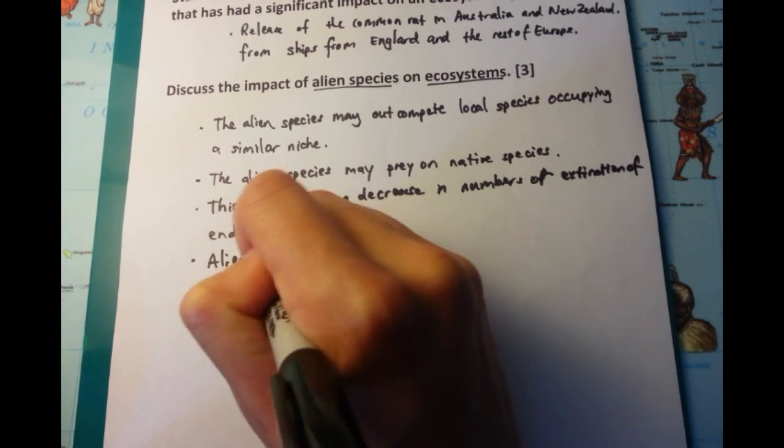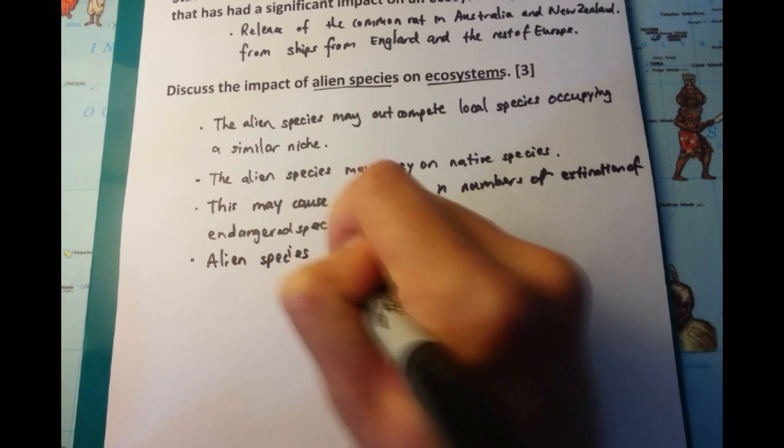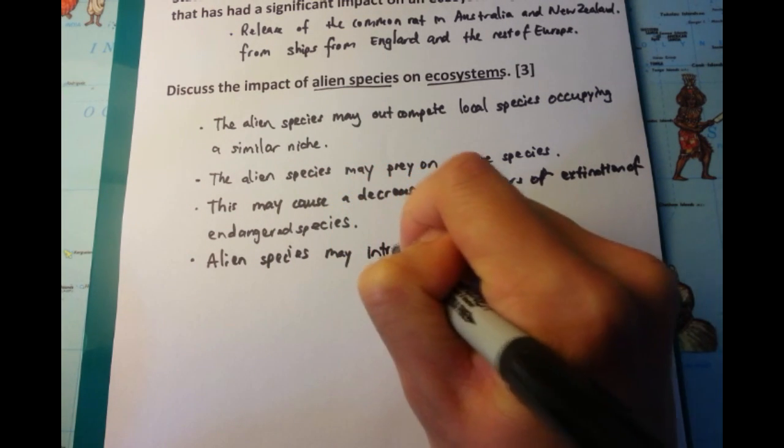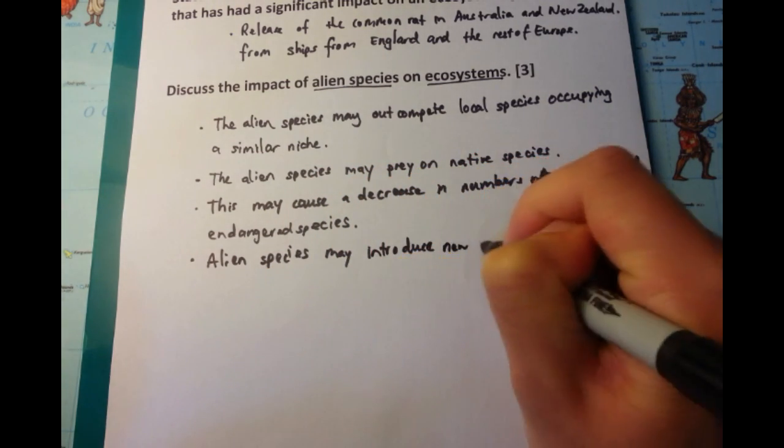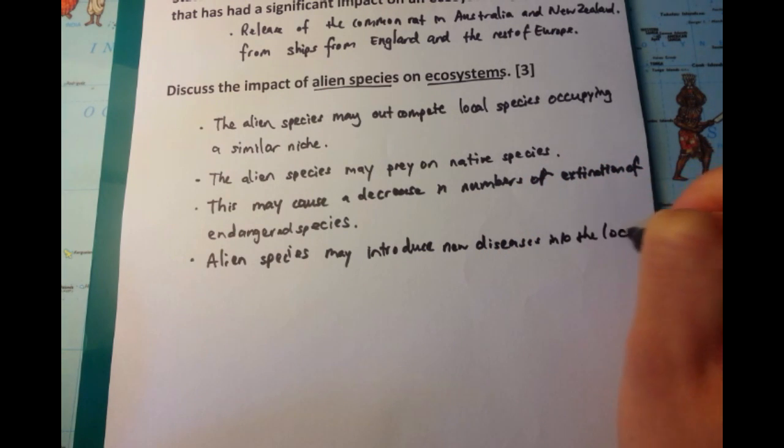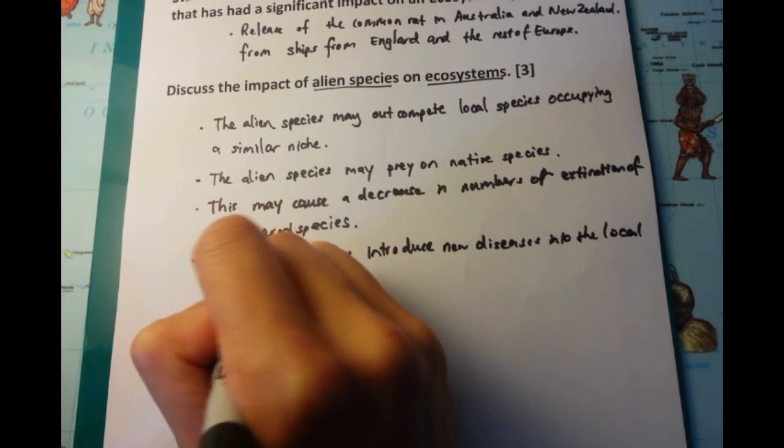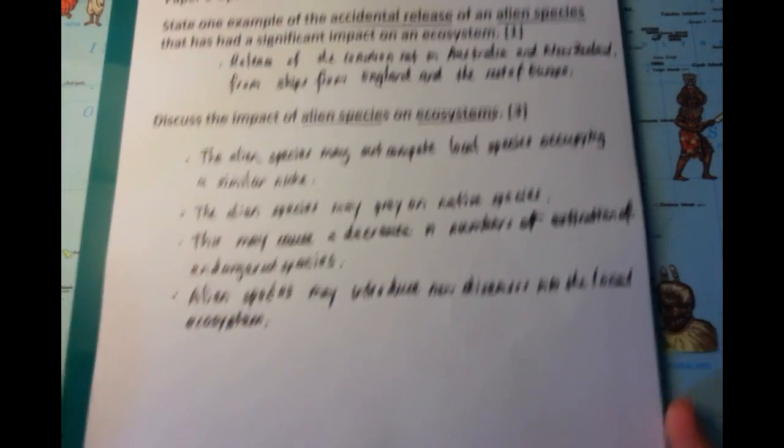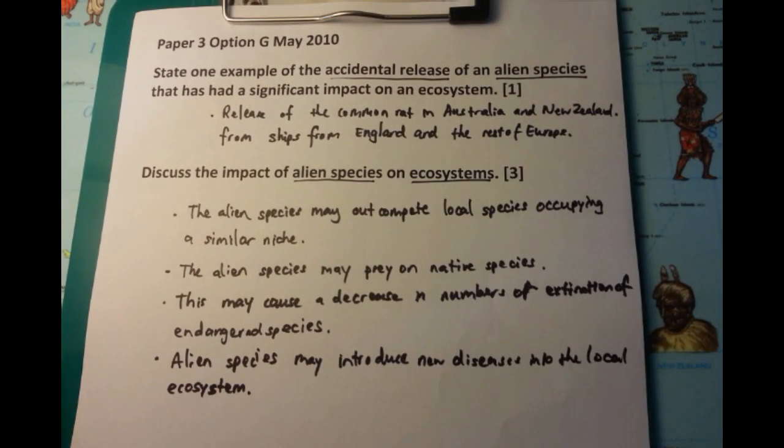In fact, in Australia, when the white settlers came over to inhabit the land, then they often brought over diseases such as smallpox, which infected the local aboriginals. And this is an example of introduction of new diseases.